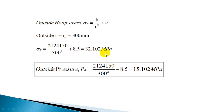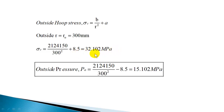Substituting into the hoop stress equation at R = 300 mm gives 32.102 MPa. Outside pressure can be calculated using B/R² − A with B known, A known, and outside radius 300 mm, giving external pressure as 15.102 MPa. Alternatively, since hoop stress equals pressure plus 2A: hoop stress minus 2A gives the pressure. So 32.102 − 2(8.5) = 32.102 − 17 = 15.102 MPa. At any radius, if you know the pressure you can find the hoop stress, or vice versa, provided you know A.